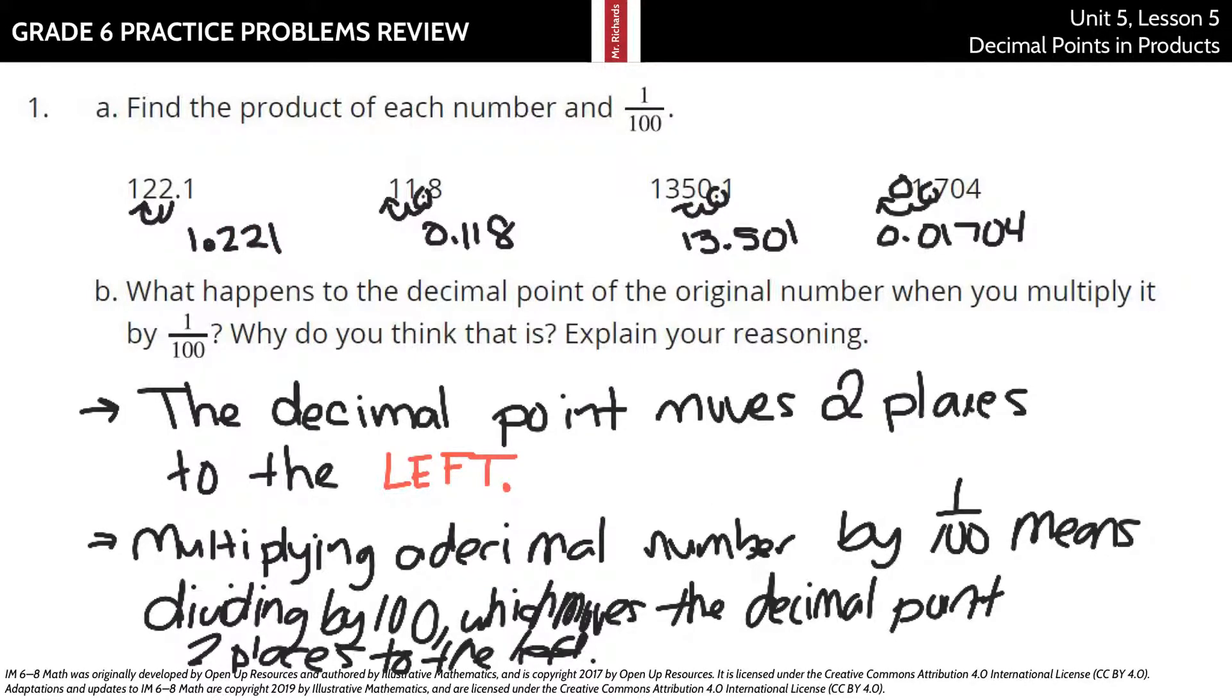Basically, you have the 1.221 thousandths, 0.118, 13.501, 0.10, sorry, 0.01704.